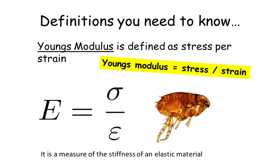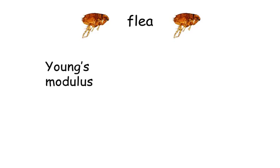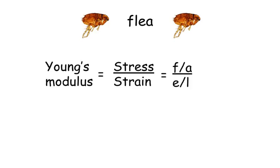Now I'm going to show you a method so you won't forget how this equation works. Young's modulus is equal to stress over strain. Stress is force divided by area, and strain is extension divided by length. By rearranging that equation, we get the word 'flee' — force times length divided by extension times area: FLEA.